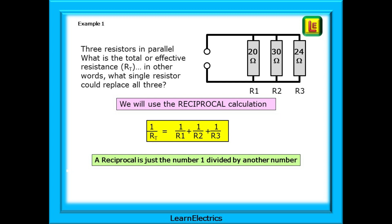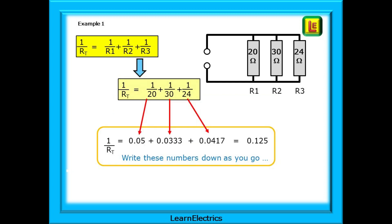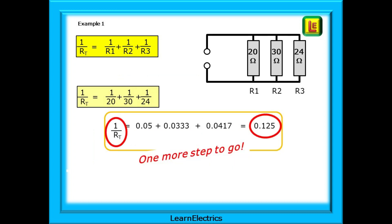And the next slide shows the working out. We can say that 1 over RT is equal to 1 over R1 plus 1 over R2 plus 1 over R3. Putting numbers into the formula, 1 over RT is equal to 1 over 20 plus 1 over 30 plus 1 over 24. If we write these calculations down as we do them, we will have three numbers shown, which added together make 0.125.